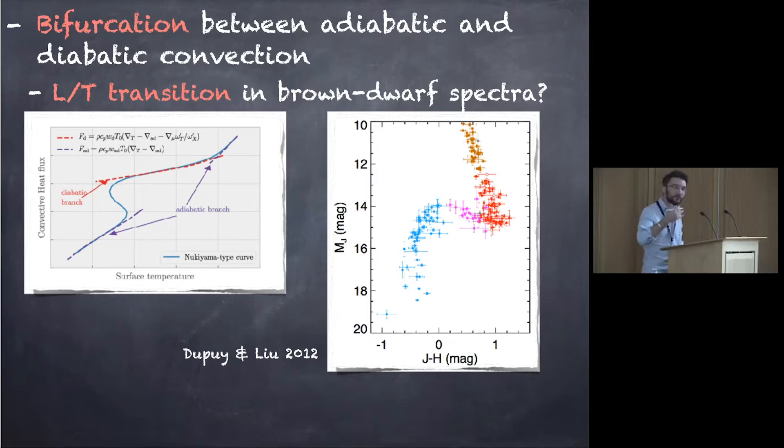When CO-CH4 transition starts to be important with the reaction, we go onto the branch with diabatic convection and you have a lower temperature in the deep atmosphere. And at some point you have this transition to go back to the adiabatic case, a warming up of the deep layer that can explain the J-band brightening in the cooling sequence.